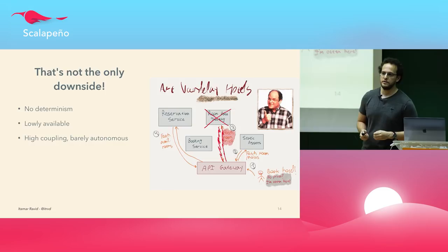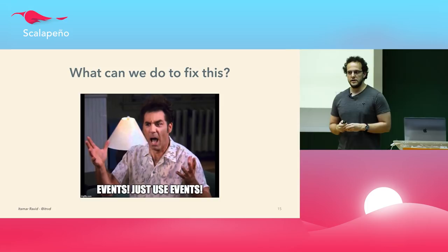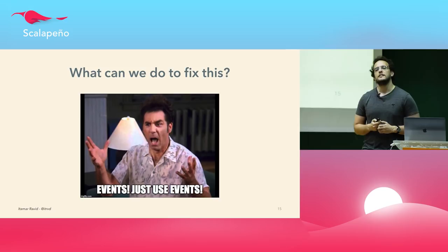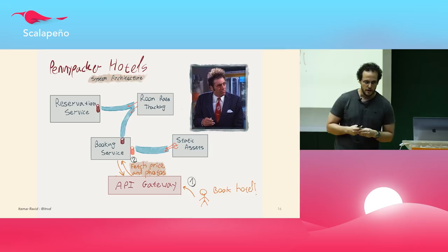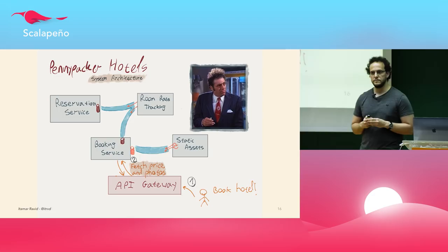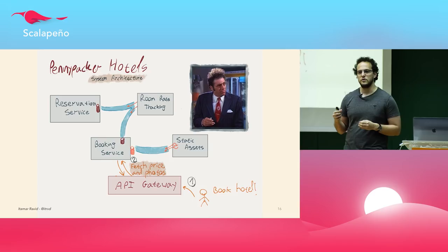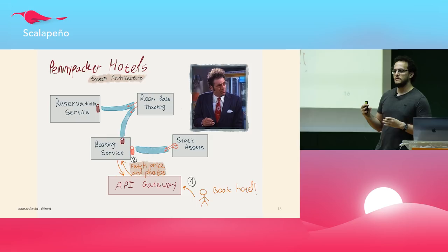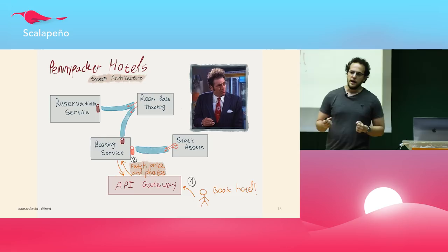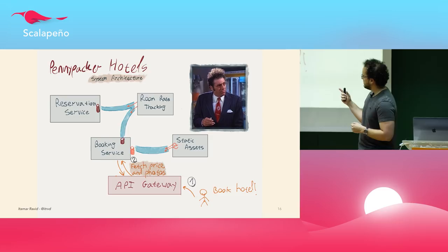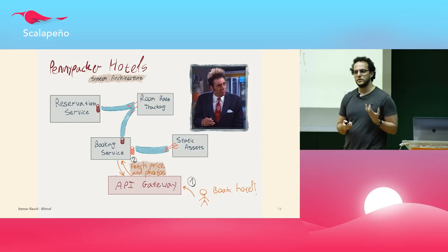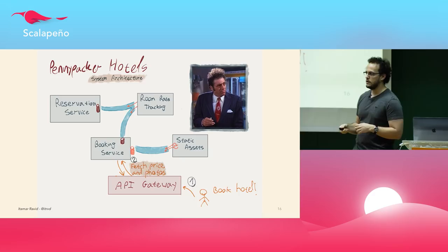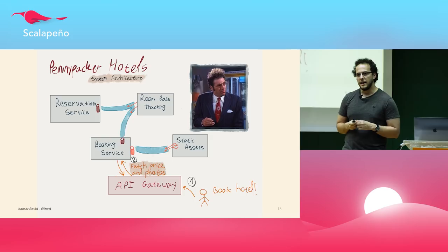The answer lately has been to use events. To demonstrate, here's another startup called Pennypacker Hotels. They export events from each service and subscribe to them from other services that are interested, creating a local cache in each service. For example, the room rate tracking service, whenever it receives a request to update a room rate, exports an event to an outgoing stream. The booking service retains a local cache of current room rates, which can be used to serve requests.